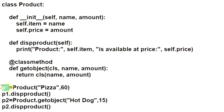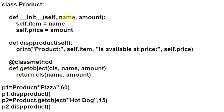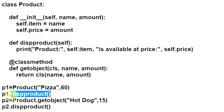You are making an object P1 of the Product class. When the compiler sees two arguments, it searches for a parameterized constructor with two parameters and finds it here. 'Pizza' will be assigned to the name parameter, and 60 to the amount parameter. These item and price are the instance attributes, meaning they are assigned to the P1 object. So the item and price attributes of P1 are set to 'pizza' and 60 respectively. Control comes here — you invoke the instance method DispProduct. Self means the object P1 itself, and the output is 'Product pizza is available at price 60'.